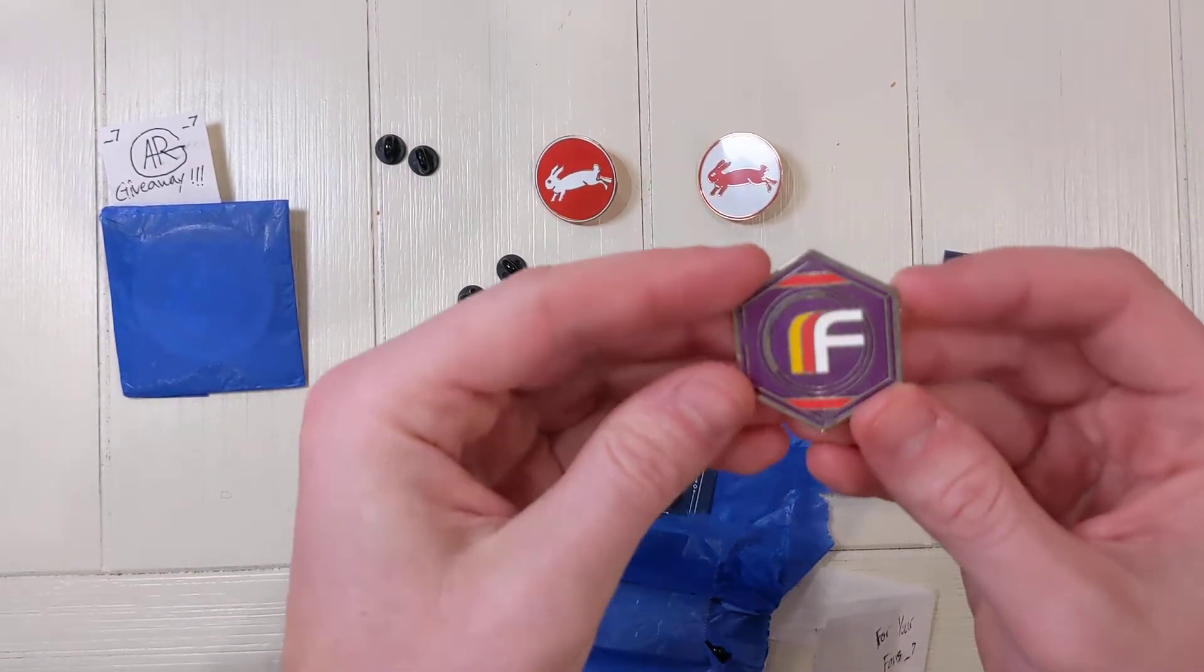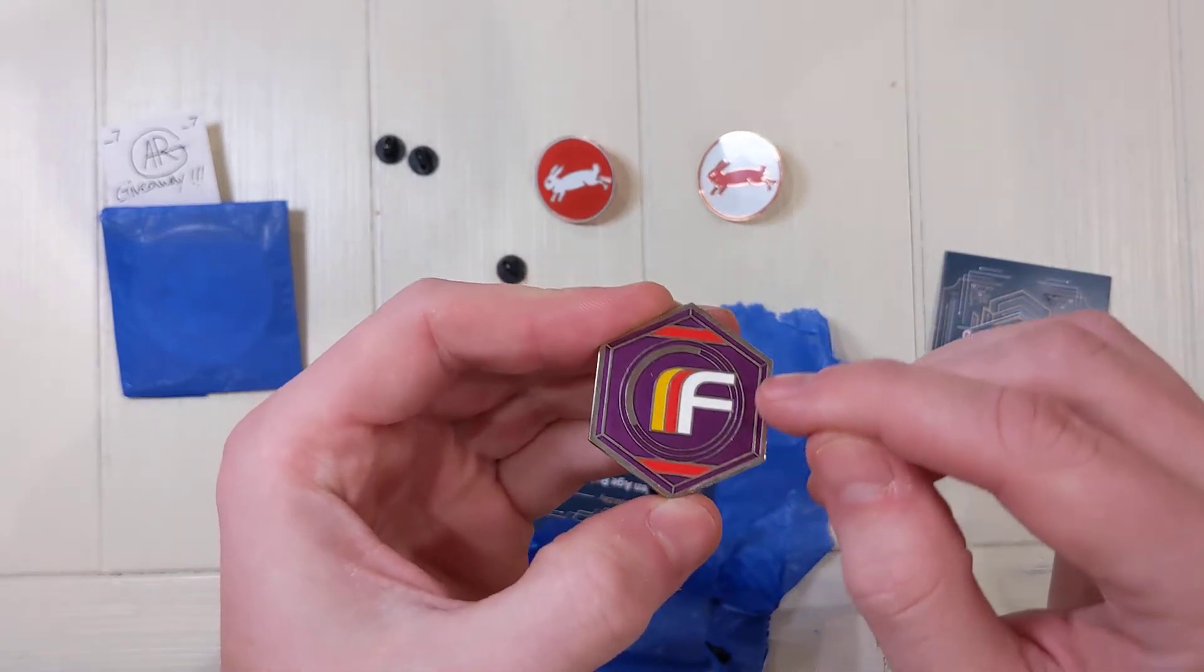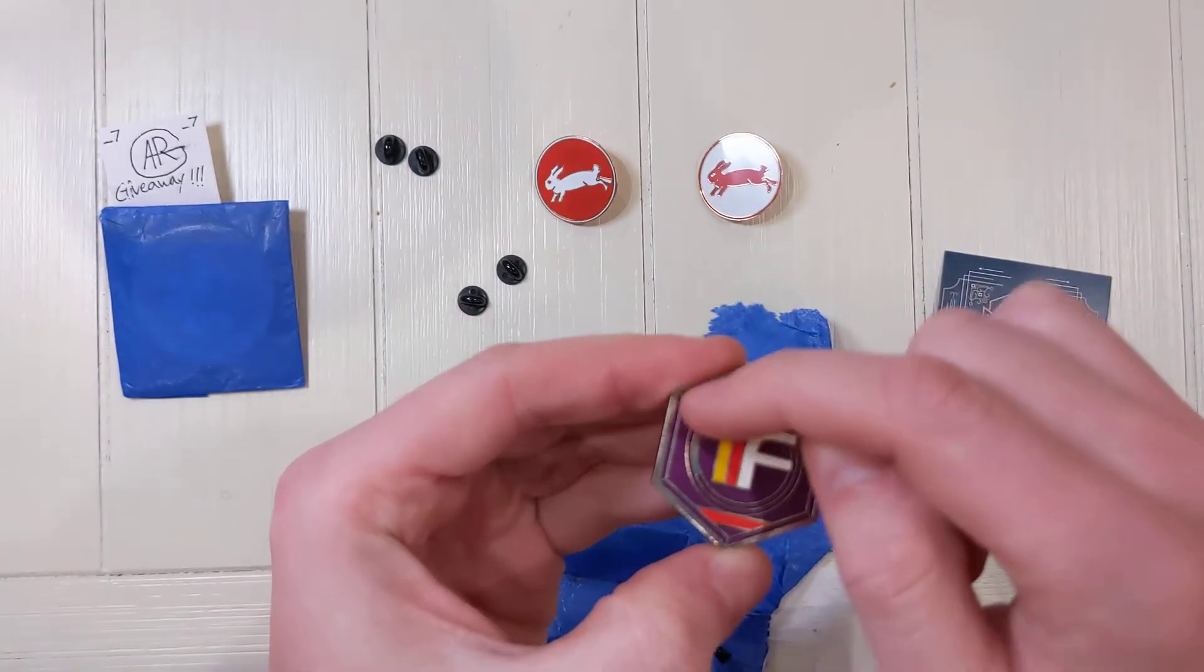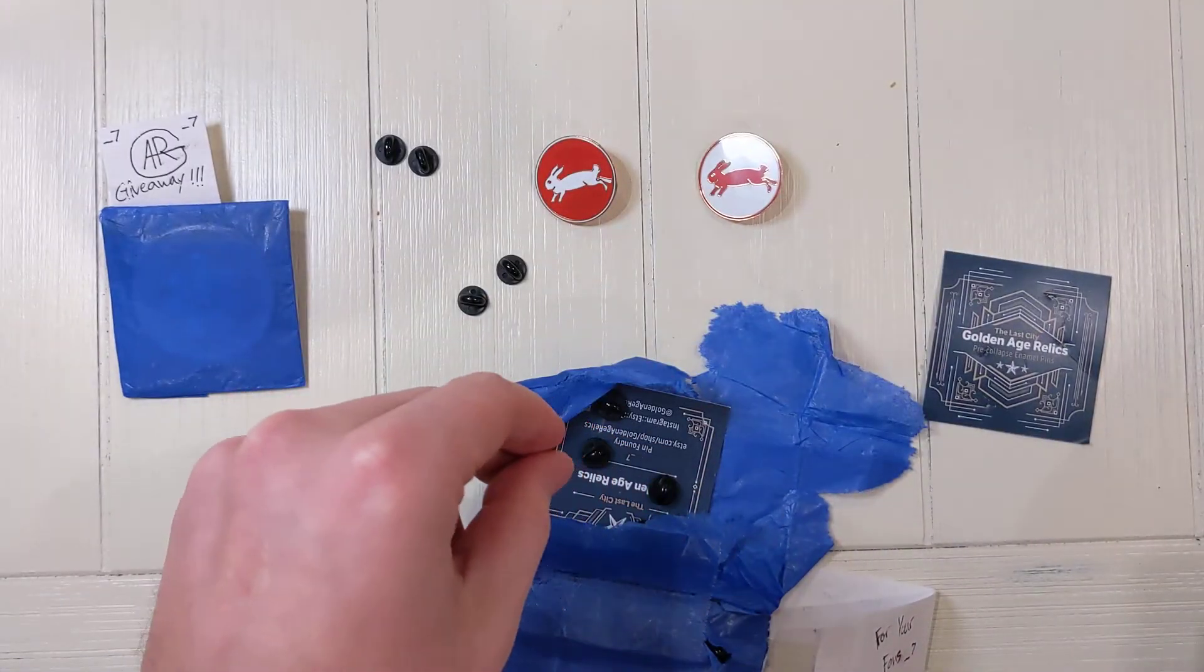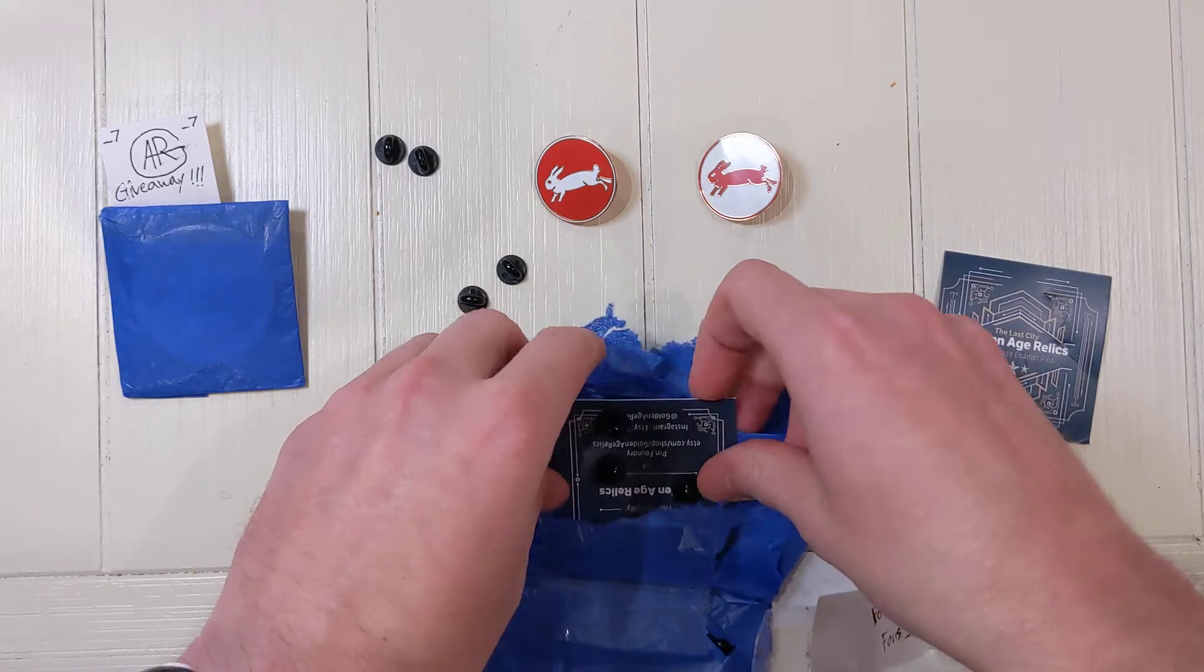So take Future War Cult, Best Cult. See how on the outside it sort of has these like frames around each of the pins. I think Golden Age did a great job showing that. All right, what else do we have here?